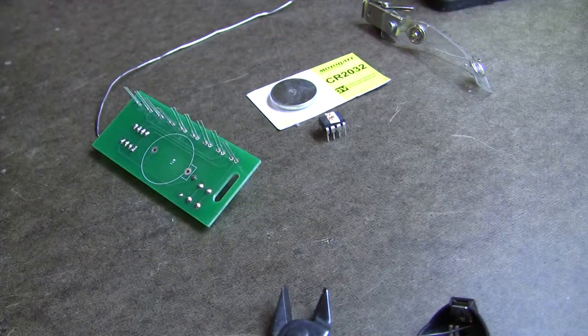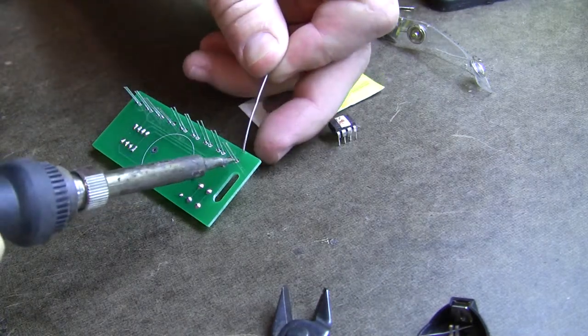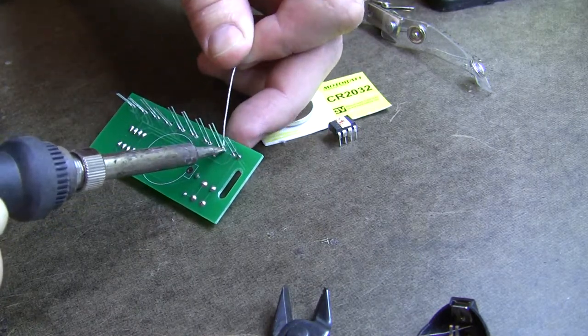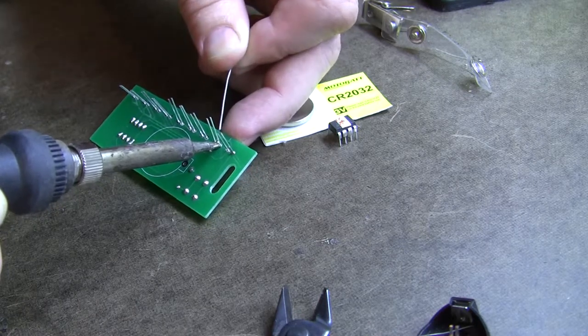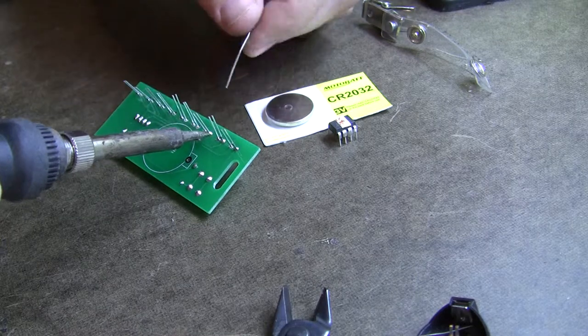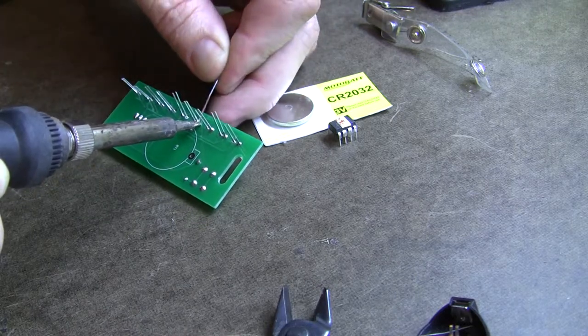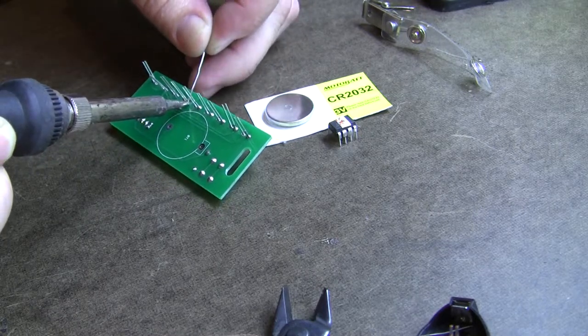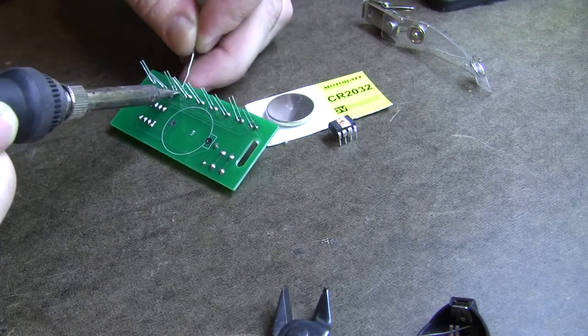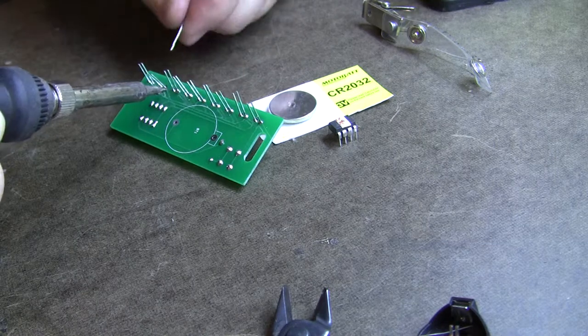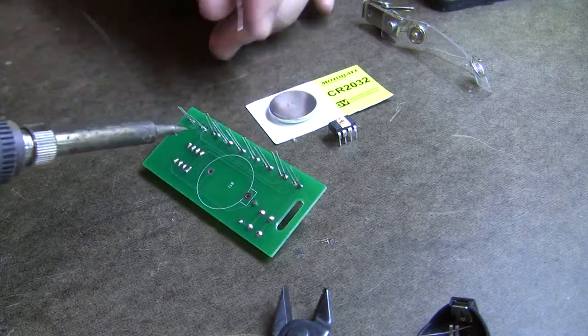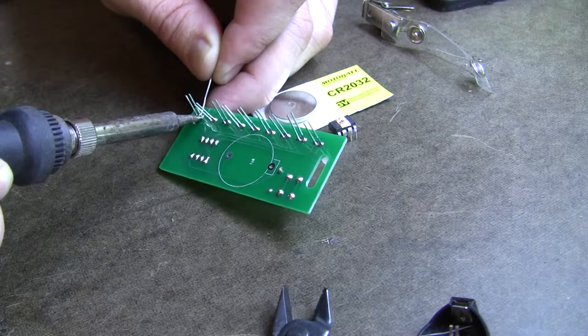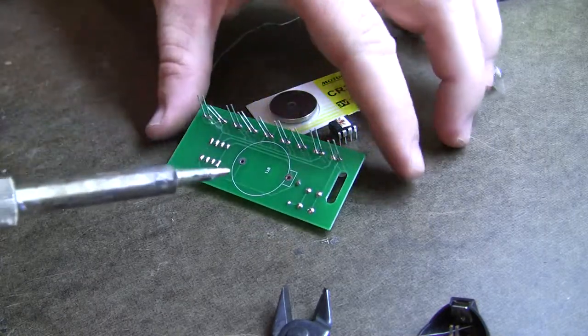Let me see if I can get around to where I'm not blocking your view quite so much. One thing that I saw a video blogger, Ben Heck, in case you are a fan, say the other day was that he likes to solder in one, only one lead of each LED. And then that allows him to flip the board over, look to see if the LEDs are in a position that he likes. Make any adjustments before soldering the second wire in. Once you solder the second wire in, it's a little harder.